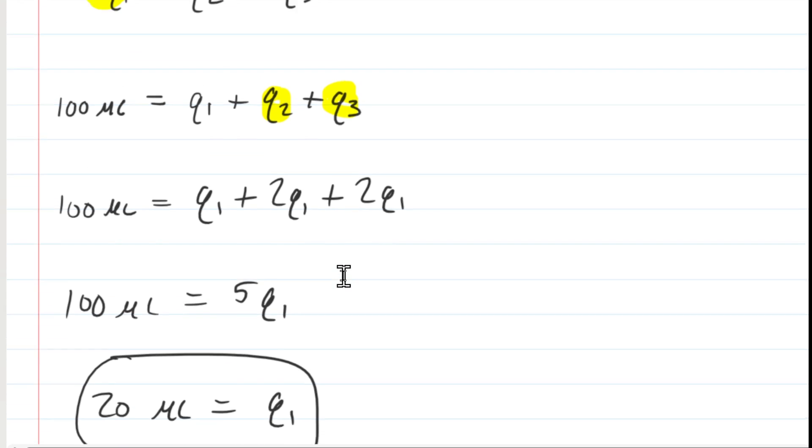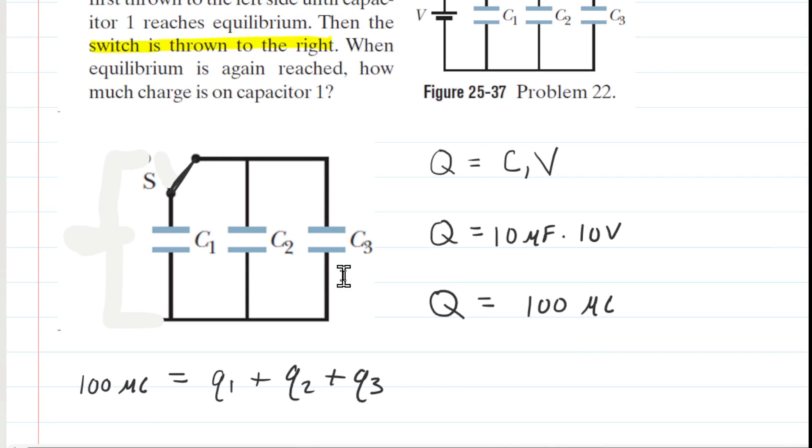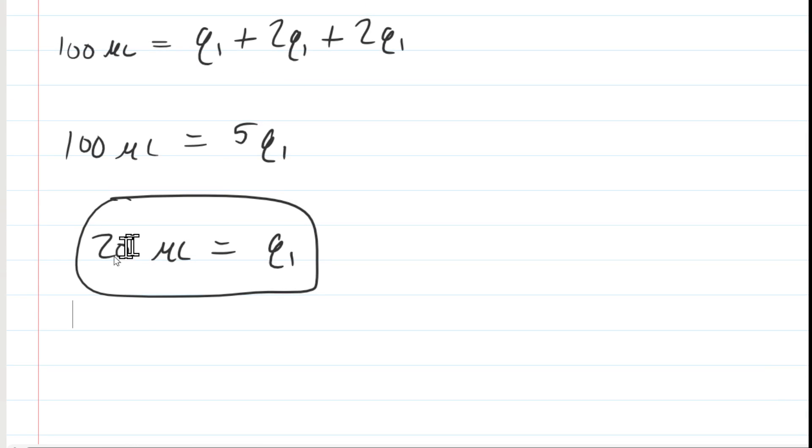So our prediction was correct. Recall we predicted that the initial amount of charge on C1, which was 100 microcoulombs, was going to get redistributed, and therefore the charge on C1 should reduce. And lo and behold, it did. It only carries now 20 microcoulombs of charge on each plate.